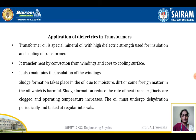Sludge is a sticky material that forms when dust, moisture, or dirt particles accumulate in the oil. Sludge reduces the rate of heat transfer, causing the temperature to keep increasing. Ducts get clogged and operating temperature rises. Since we need the oil as a cooling agent, sludge formation by the transformer oil is detrimental. The oil must undergo dehydration periodically and be tested at regular intervals.